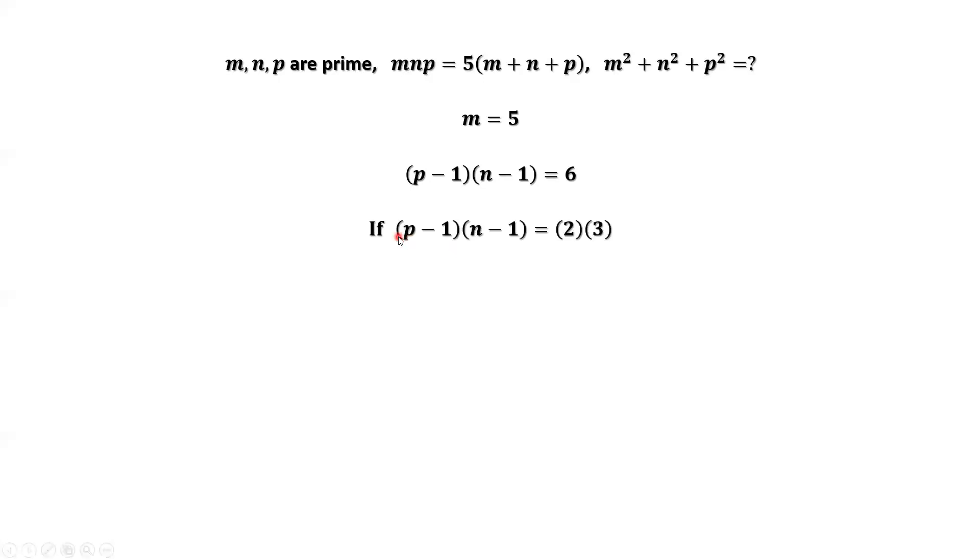If p minus 1 times n minus 1 equals 2 times 3, then we have the first factor equals 2, the second factor equals 3. Solving this system, we have p equals 3, n equals 4. From the given condition, n must be prime. 4 is not prime, so this is not the solution.